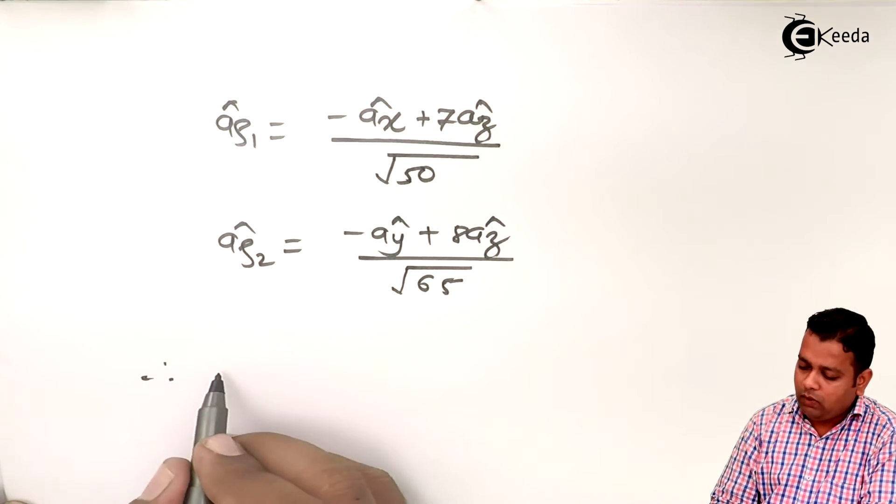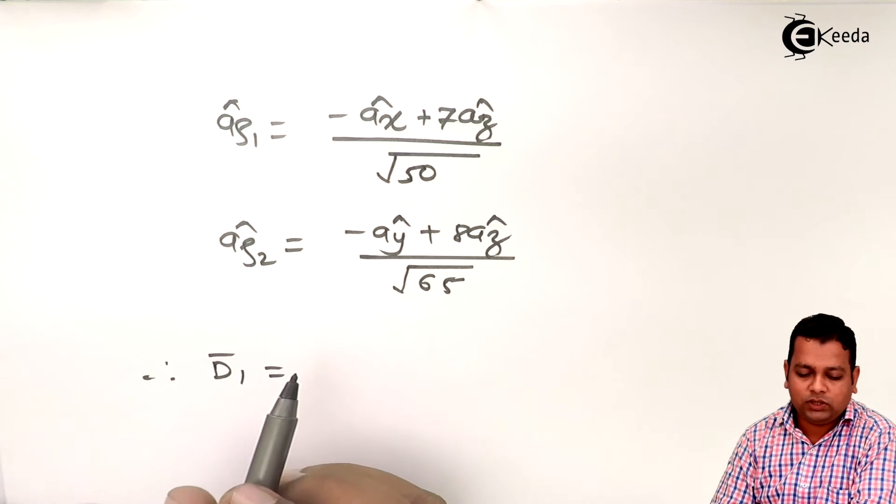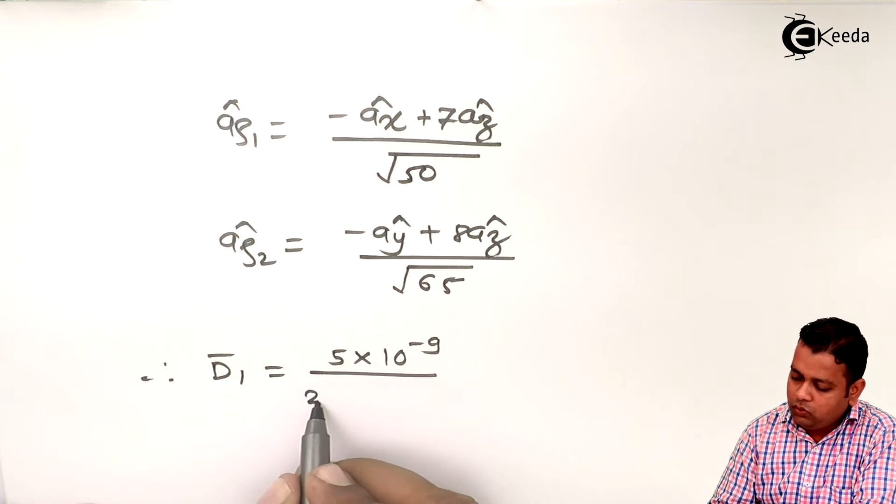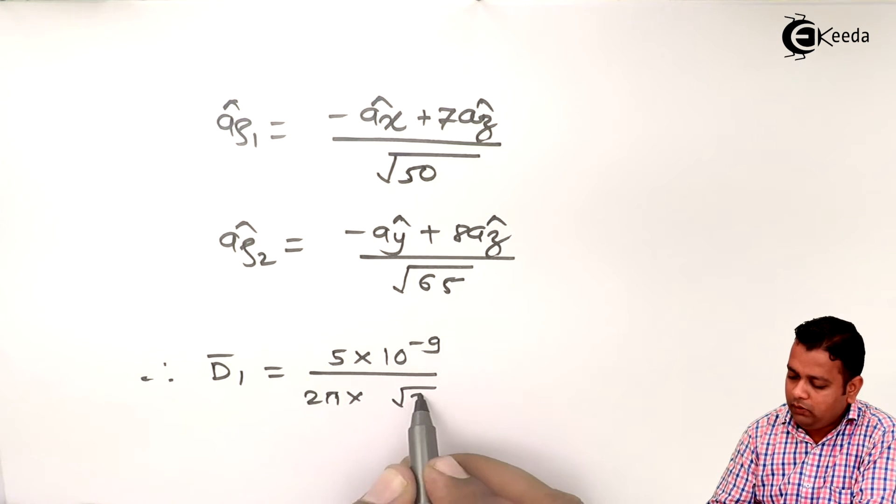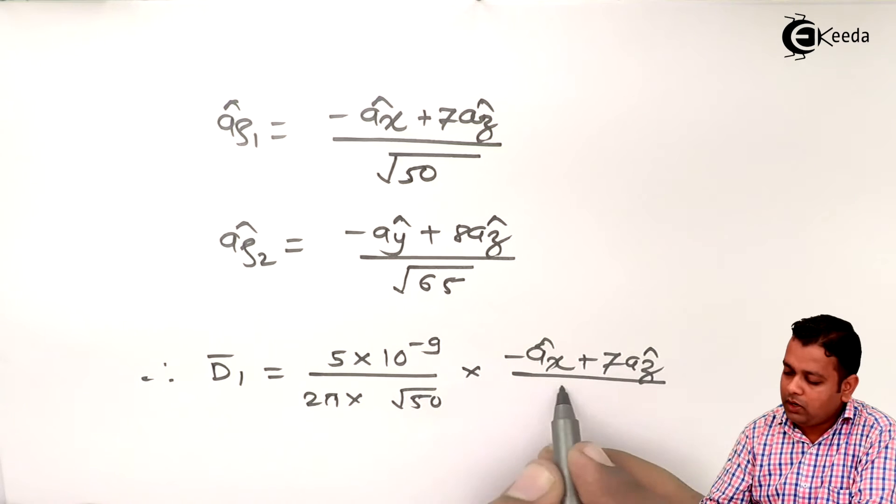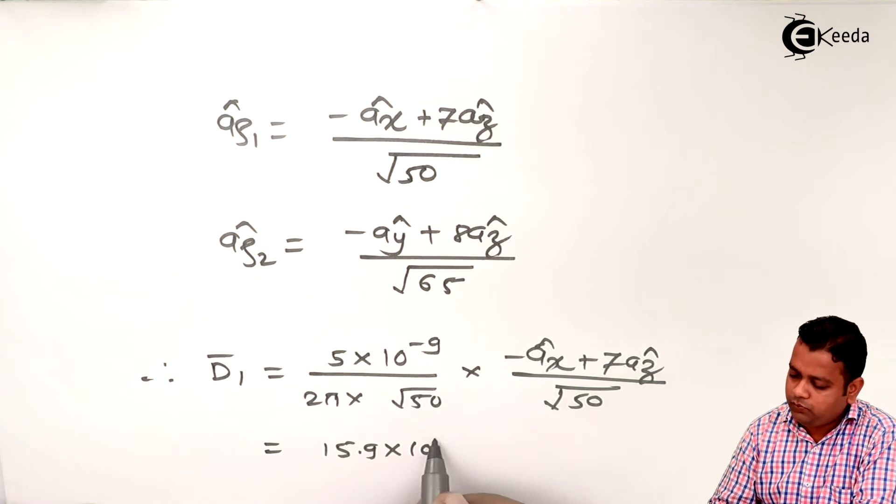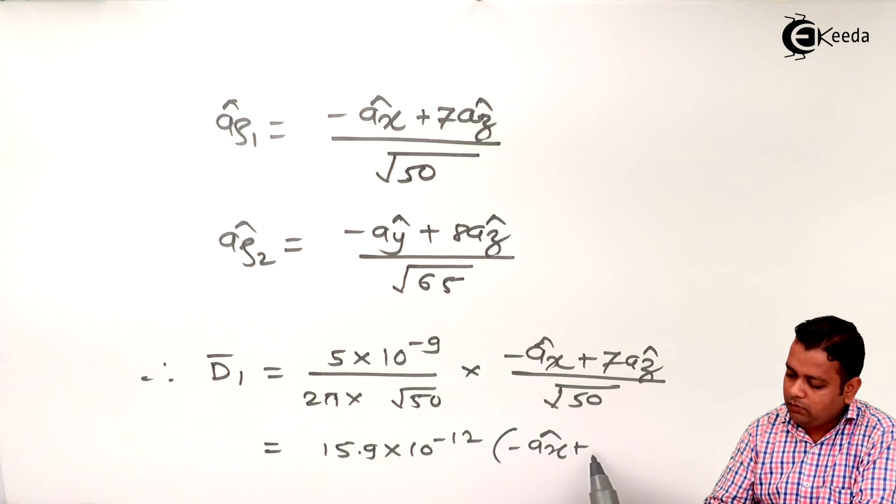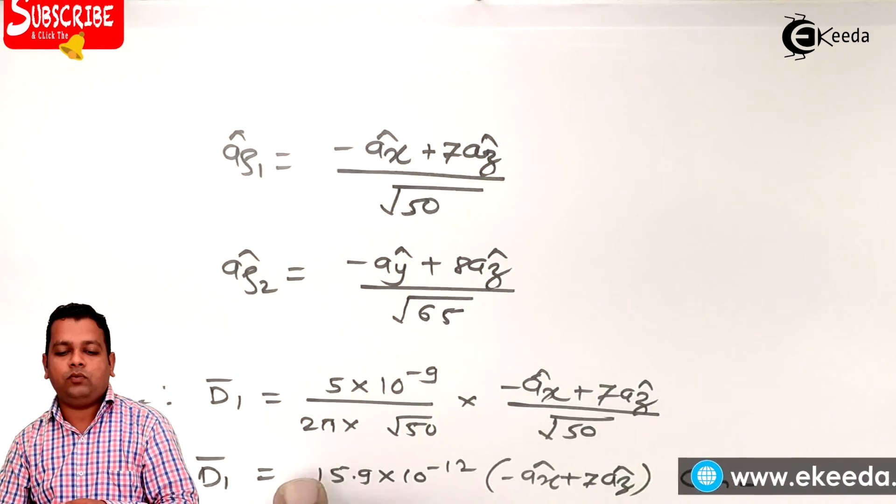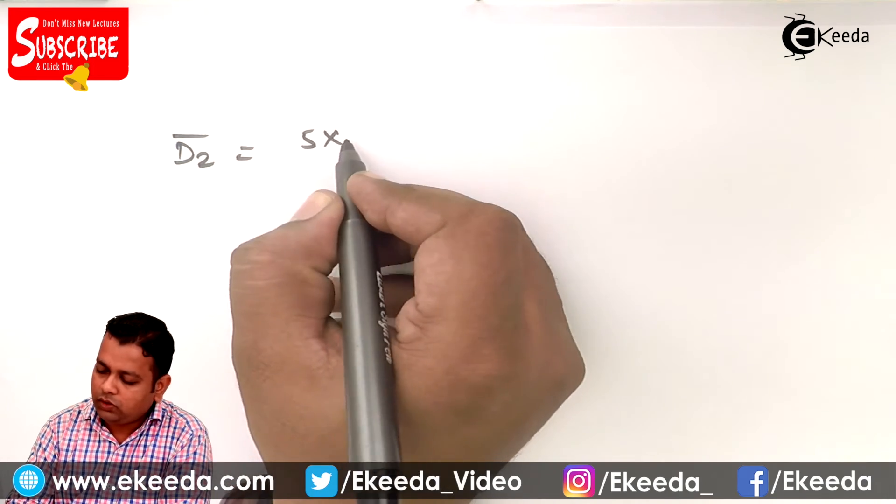Hence D1 bar is equal to 15.9 into 10 to the power minus 12 minus Ax cap plus 7Az cap. Unit will be coulomb per meter square. This is D1 bar.